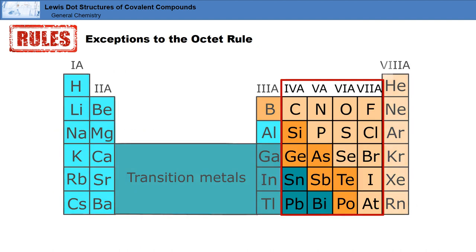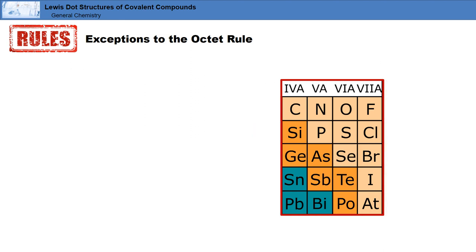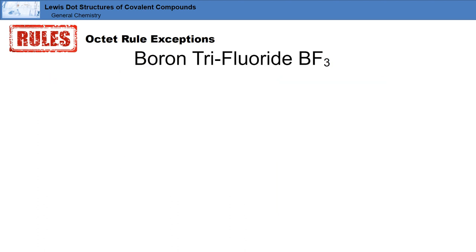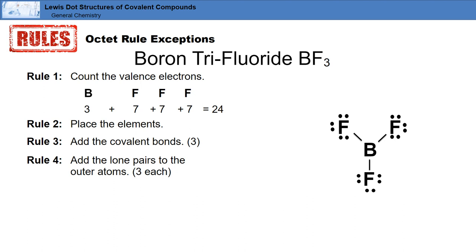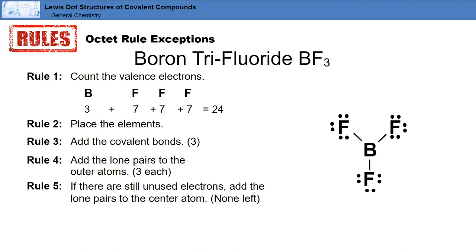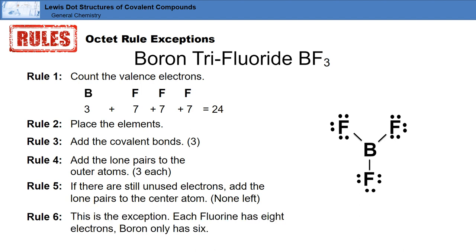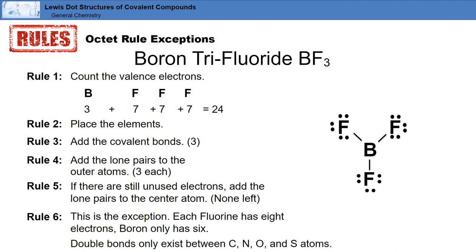The octet rule applies to groups 4a through 7a in the second row of the periodic table, but there are exceptions to the rule. Let's take a look at two examples: BF3, or boron trifluoride, and PF5, or phosphorous pentafluoride. We'll start by applying the first five rules to boron trifluoride. Next, we'll move on to rule six, which is where we find the exception. Check the number of electrons around each atom. Each fluorine atom has eight electrons, but boron only has six, which makes it an exception to the octet rule. A boron-fluorine double bond isn't an option because double bonds only exist between carbon, nitrogen, oxygen, and sulfur atoms. The result of this exception is the Lewis dot structure for boron trifluoride.